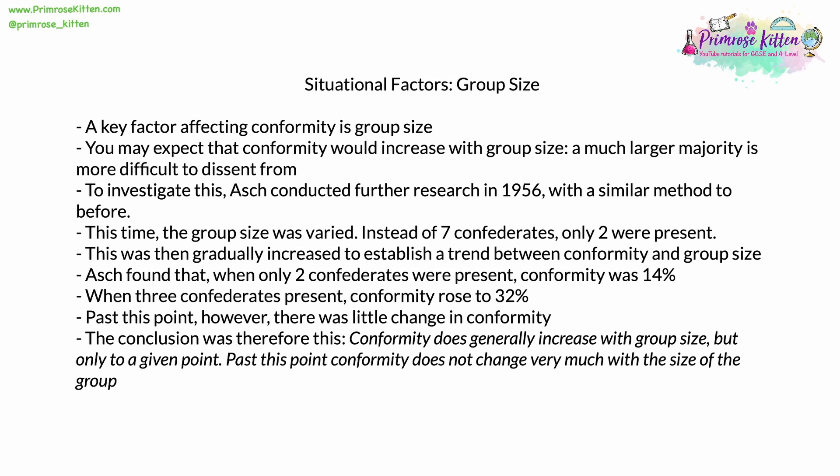A key situational factor affecting conformity is the size of the wider social group. You might expect conformity to increase with group size, as a larger majority is more difficult to dissent from. To investigate this, Asch conducted further research about five years after his initial study using a similar method. Participants judged the length of a line against four possible answers, but this time group size was varied — starting with only two confederates, which was then gradually increased to try to establish a trend.